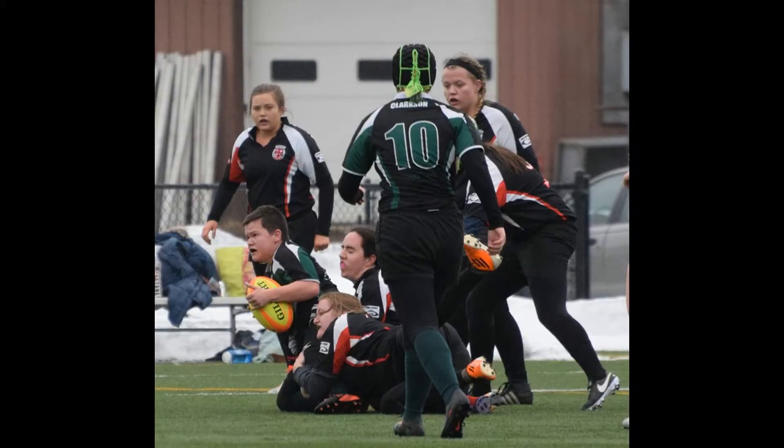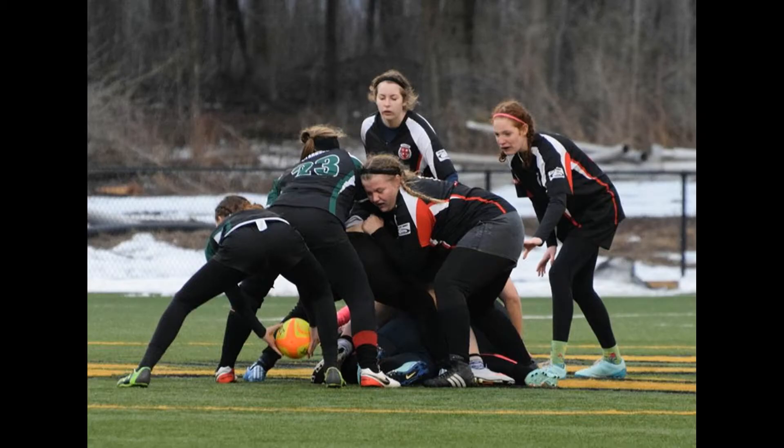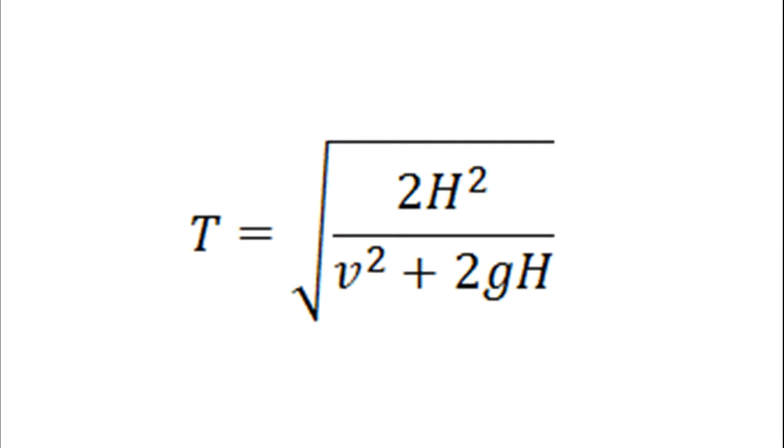Once tackled, you are allowed one move to present the ball towards your team. The longer you take to fall, the better because you have more time to make this move. The formula to determine how long you have before you fall is t equals the square root of 2H squared divided by v squared plus 2gH, where H is your height, v is your velocity, and g is gravitational acceleration which is a constant of 9.8 meters per second per second.